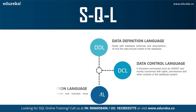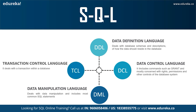The next command is DML — Data Manipulation Language — which allows you to access and manipulate data. It helps you insert, update, delete, and retrieve data from the database. The INSERT command inserts data into a table, UPDATE modifies existing data within the table, and DELETE removes records from the database. The final command is TCL — Transaction Control Language — which deals with transactions of the database. TCL commands include COMMIT, ROLLBACK, SAVEPOINT, and SET TRANSACTION.